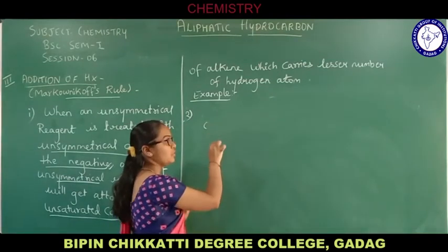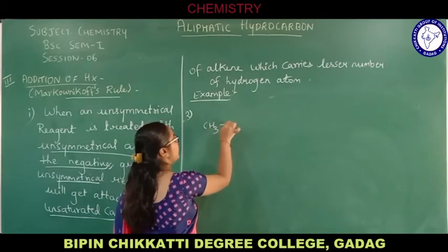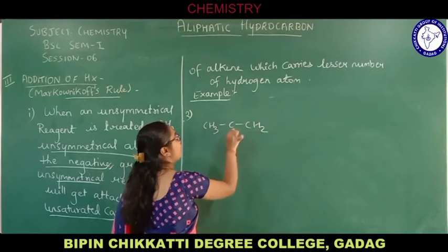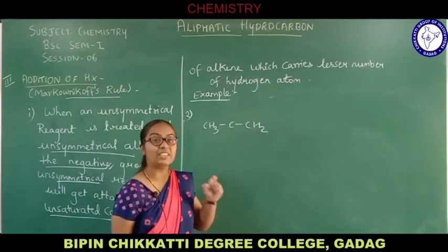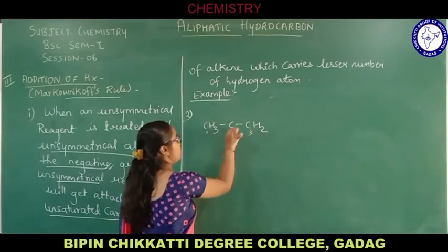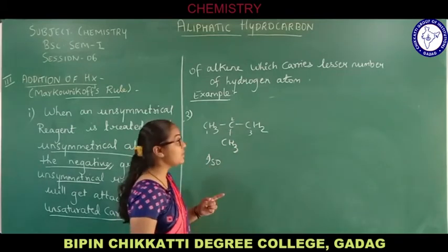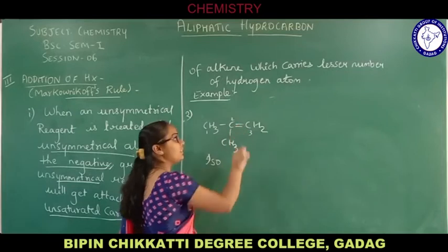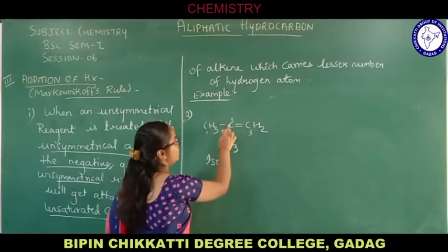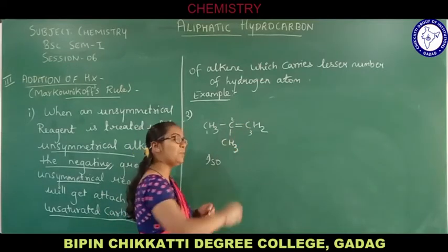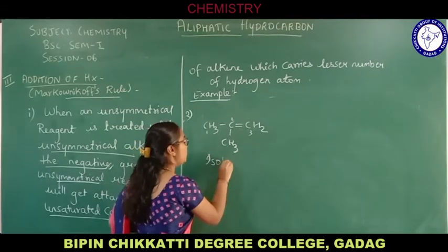Now let us take the second example to understand Markovnikov's rule in more detail — isobutylene. What do you understand by isobutylene? CH₃-C(=CH₂)-CH₃ — iso means at carbon number two, the methyl group will get attached. So carbon number 1, 2, 3 — at carbon number two the methyl group is attached, making it iso. Butylene means the parent alkane has four carbons with a double bond present.